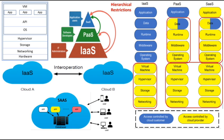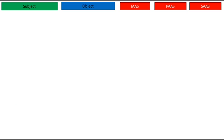In the IaaS model, a customer may acquire services from two different cloud service providers. It is then the responsibility of both cloud service providers to interoperate in order to provide transparent Infrastructure as a Service to the customer.